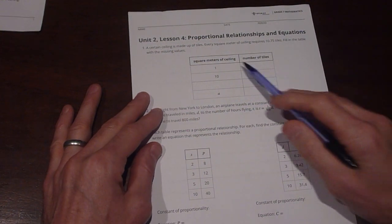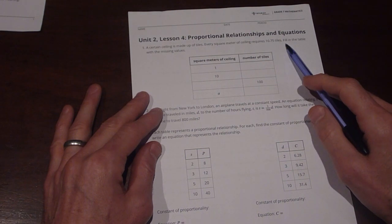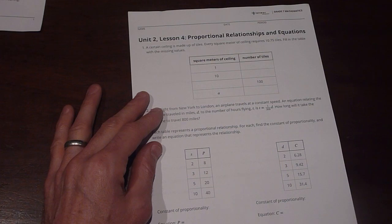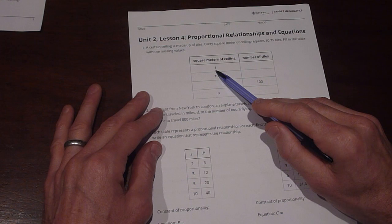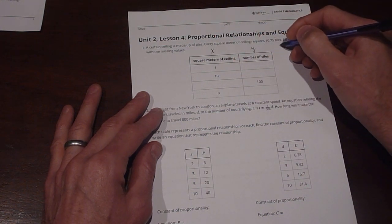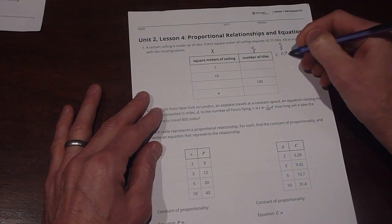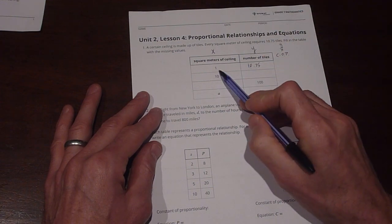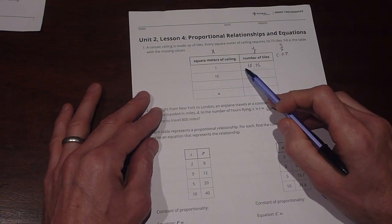Number one says a certain ceiling is made up of tiles. Every square meter of ceiling requires 10.75 tiles. Fill in the table with the missing values. So the number of tiles for this first problem, we know that the unit rate is when one is here in the X column, and the Y is going to let us know what that is. This is going to be Y over X for our constant of proportionality right here. So this is going to be 10.75. For every square meter, we're going to have 10.75 ceiling tiles.